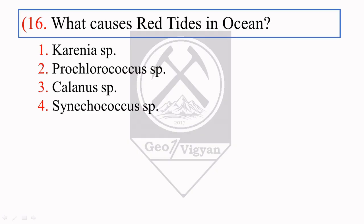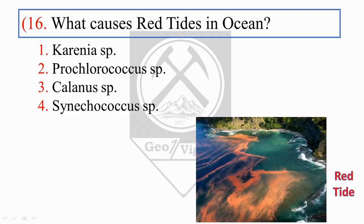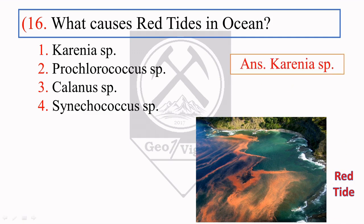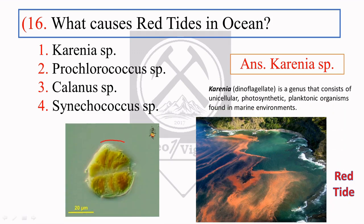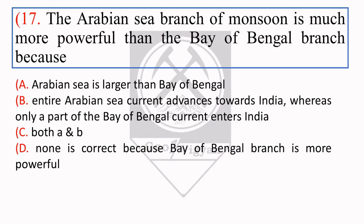The next question: what causes red tides in oceans? Tides are the rise and fall of sea level caused by the combined gravitational force of the moon and the sun and the rotation of the earth. Red tide is a common name for algal blooms — large concentrations of aquatic microorganisms such as protozoans and unicellular algae. The right answer is Karenia species. Karenia is a genus of unicellular, photosynthetic, planktonic organisms found in marine environments.